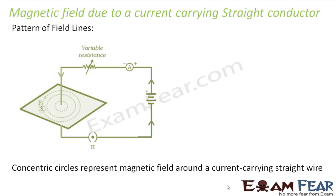In order to determine the pattern of field lines, an experimental setup was done. There was a straight current carrying conductor connected in a circuit with a variable resistance, a battery, and a switch. When the key is closed, current flows through this wire. A white sheet of cardboard was fixed such that the wire carrying the current is perpendicular to the cardboard.